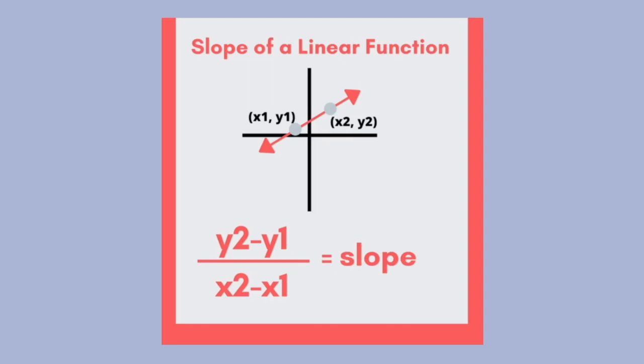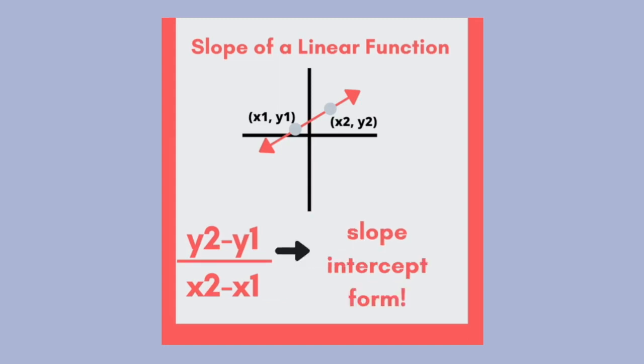The slope of a linear function is y2 minus y1 divided by x2 minus x1. The ending result is the basis of slope-intercept form.